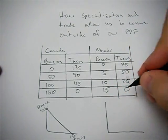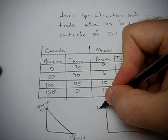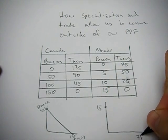And Mexico, again bacon here is going to be 15, and tacos 75.